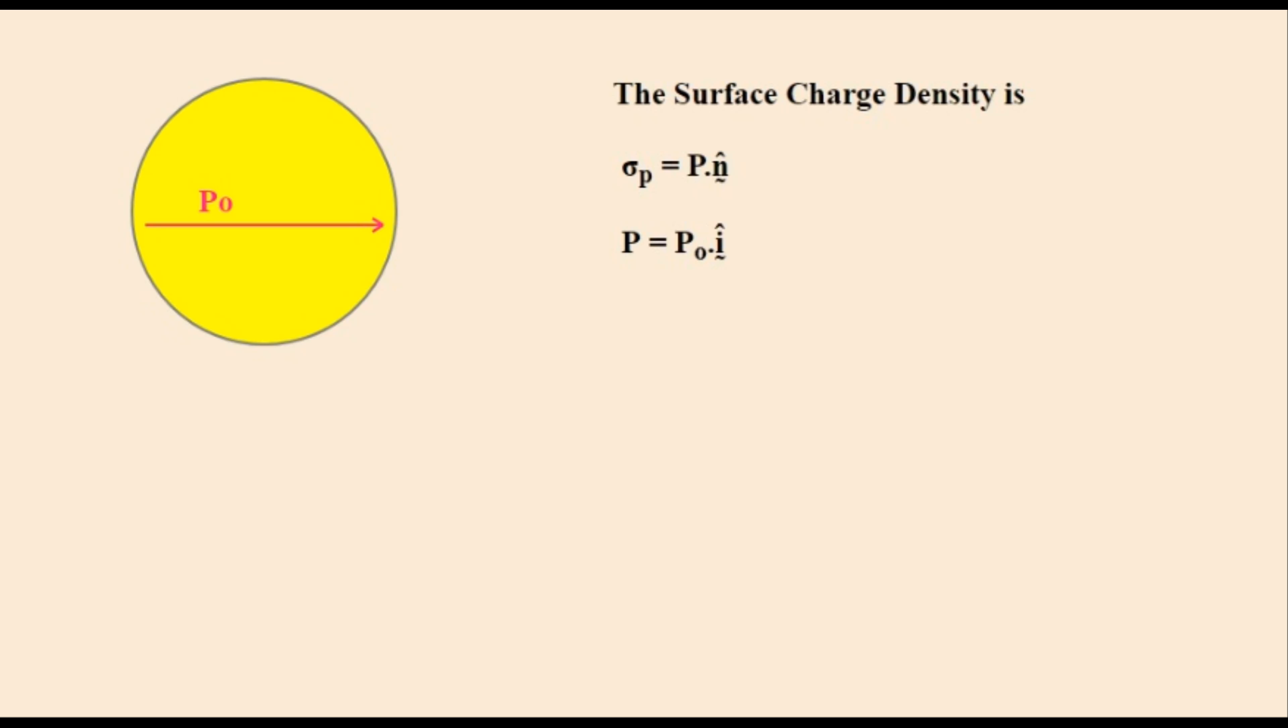If we pick a point A on its surface it will have an angle theta with the center as shown. The component of its normal vector that is in the same direction as P which is direction I is cosine theta. So the surface normal vector may be written out like this.